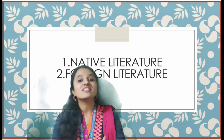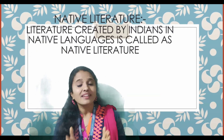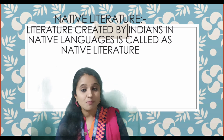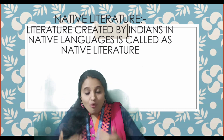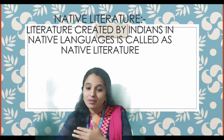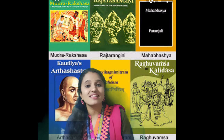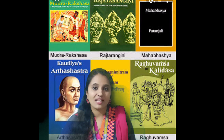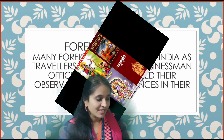Written literature divides into two: native literature and foreign literature. Native literature is the literature created by Indian natives, written in their own language — for example, Kannada, Telugu, Tamil, Hindi, and Marathi. Indians writing in their own language is considered native literature. Examples include the Bhagavad Gita, Mahabharata, Ramayana, and Kautilya's Arthashastra.